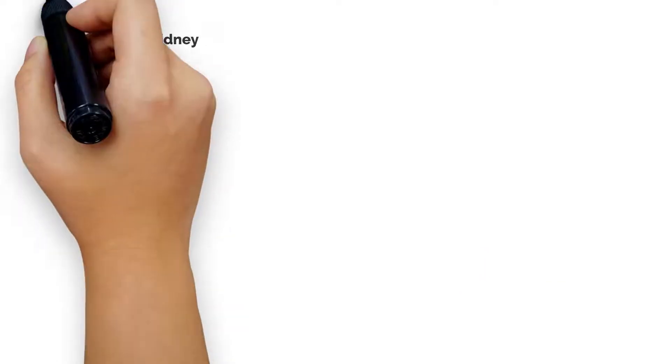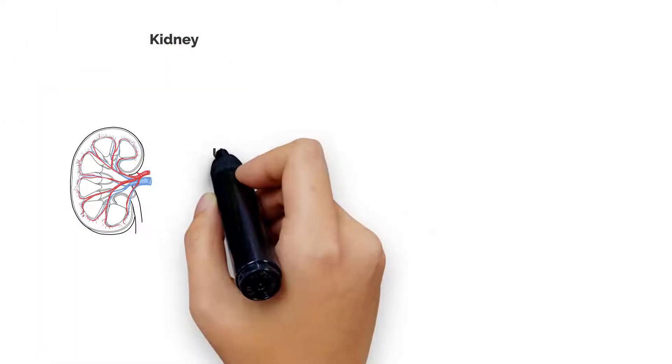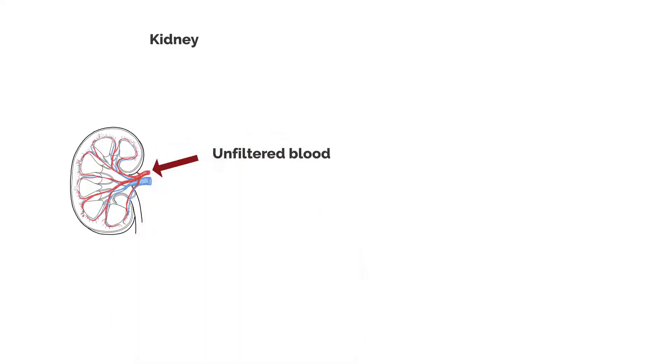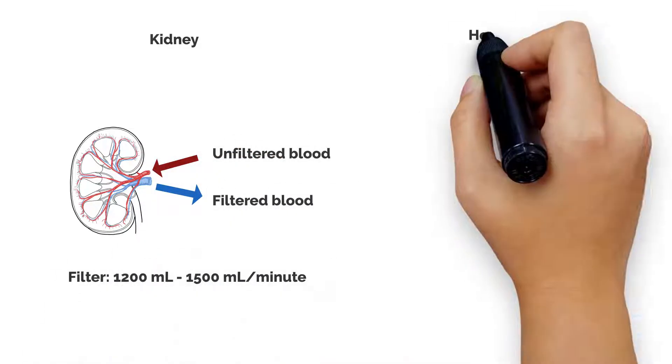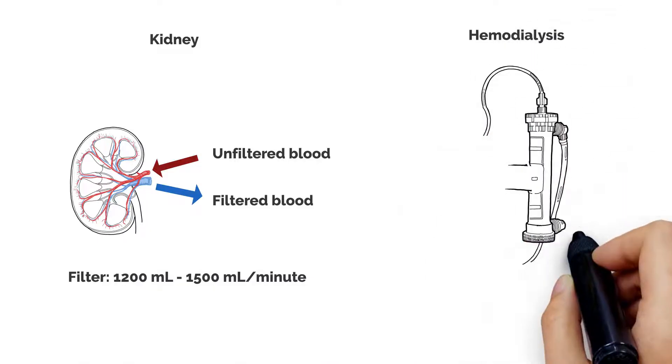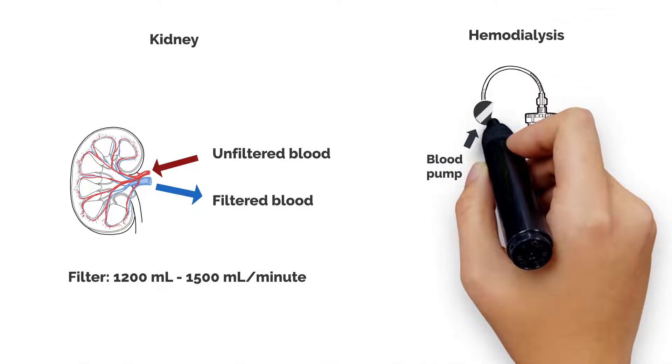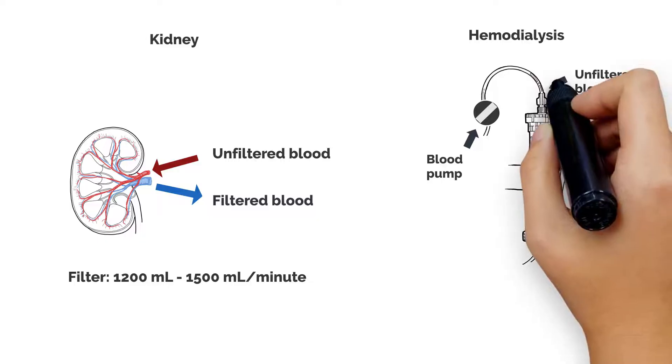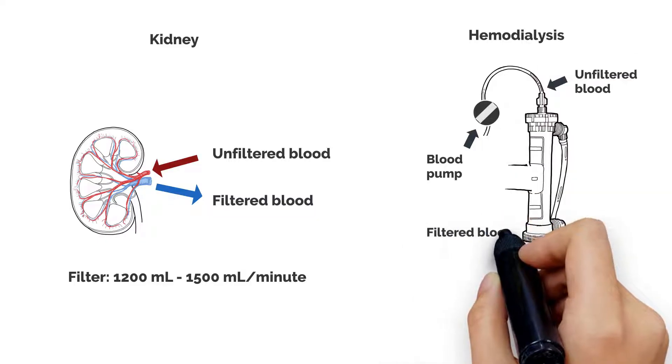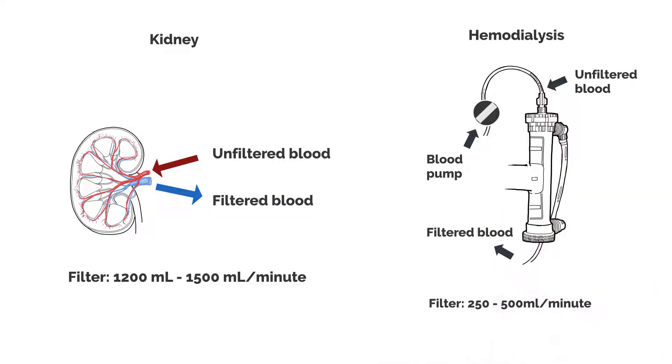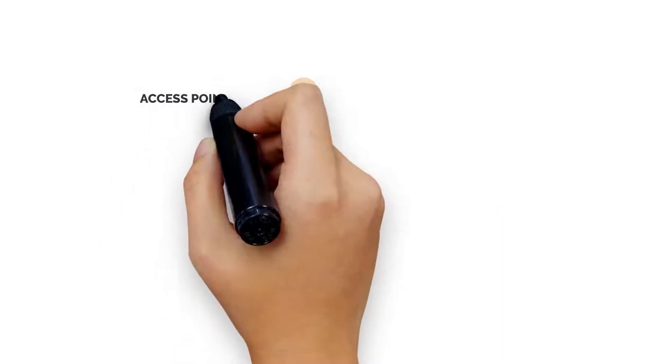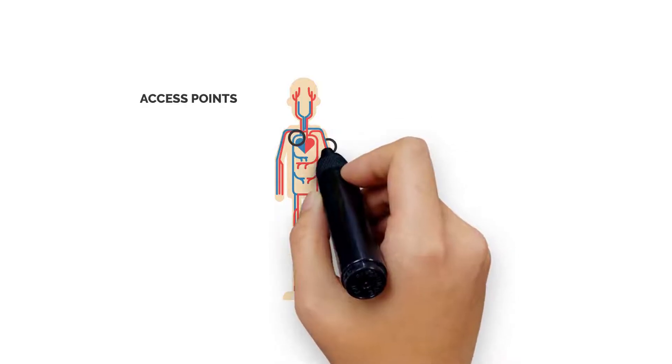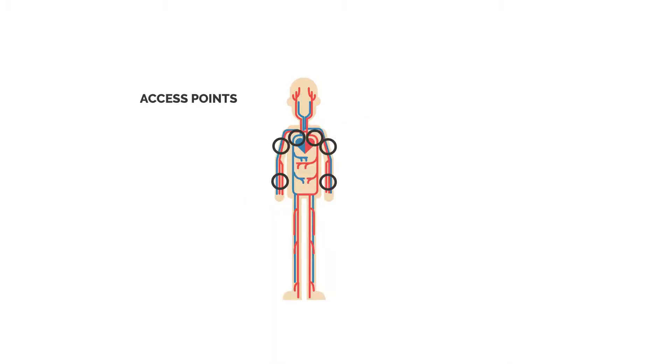To give you a clearer picture, a healthy kidney has the ability to filter approximately 1200 to 1500 milliliters of blood every minute. Hemodialysis aims to replicate this function by filtering about 250 to 500 milliliters per minute. Given the substantial volume of blood involved, specialized access points are established to ensure efficient blood flow for effective filtration.